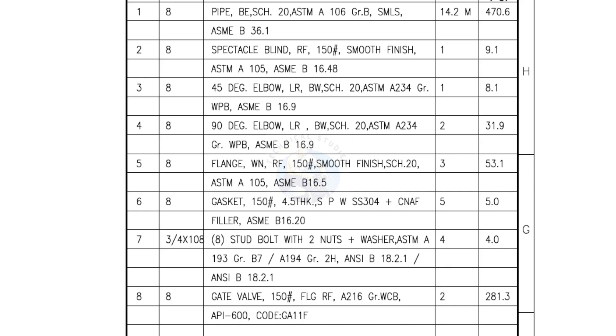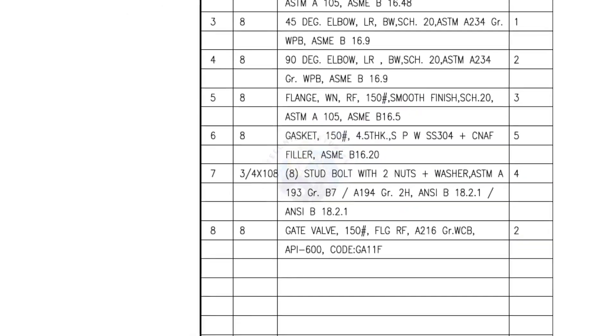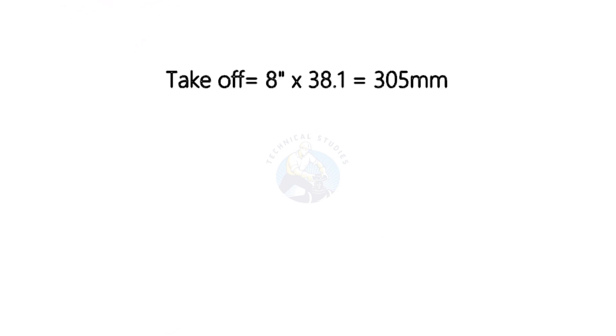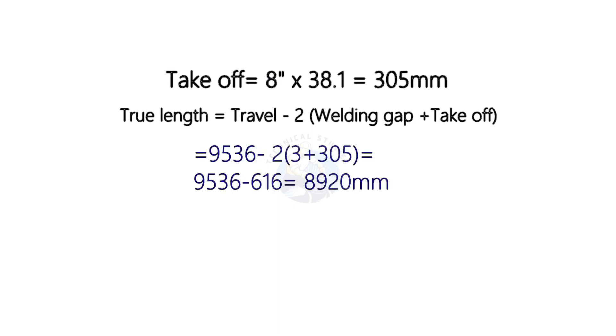Let us calculate the true length of the pipe. To calculate the true length, we need to know two things: the take off length and the welding gap. How to calculate the takeoff of a long radius 90 degree elbow? The formula is diameter in inches multiplied by 38.1. Let us assume the welding gap is 3 millimeters. So the cut length is 8,920 millimeters.